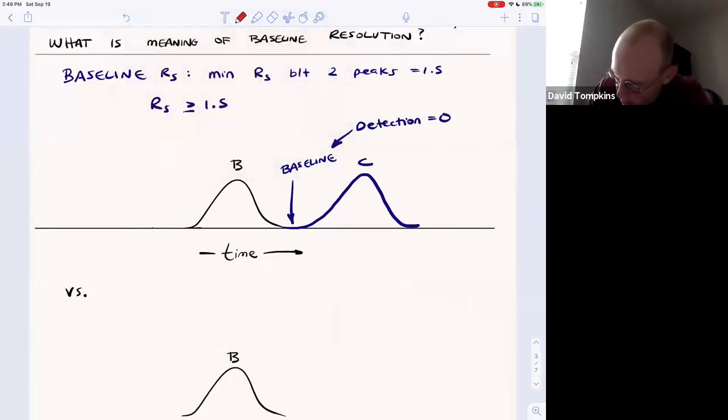And statistically you can prove, we won't go through it, it's not important for you, but statistically you can prove that this difference between the retention times must be six times the standard deviation sigma.